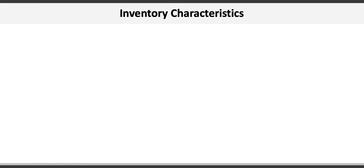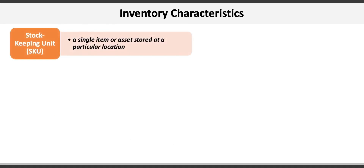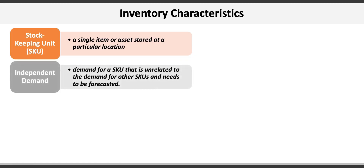One of the first steps in analyzing inventory problems is to describe the essential characteristics of the environment and inventory system. There are eight general characteristics of inventory. A stock-keeping unit, or SKU, is a single item or asset stored in a particular location — necessary to determine the number of items in inventory. The nature of demand is also important: demand can be either independent or dependent. Independent demand for a SKU is unrelated to the demand for other SKUs and needs to be forecasted.